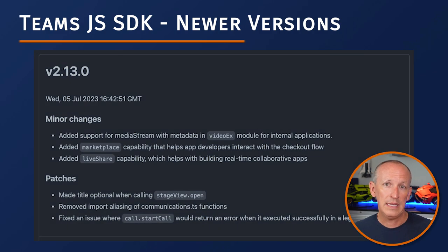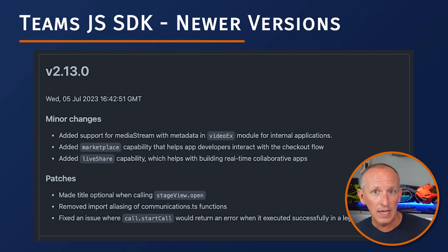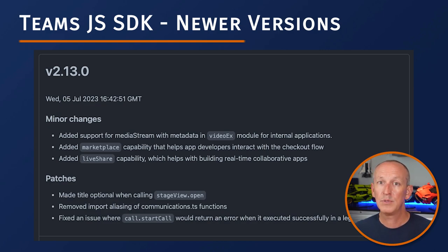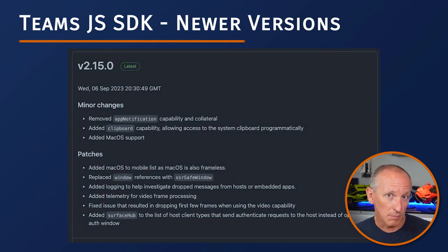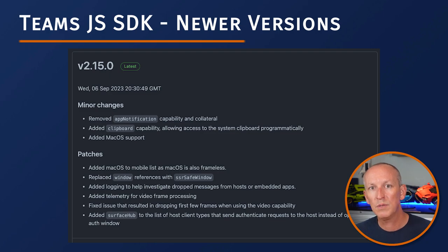The Teams JavaScript SDK group has released several new versions beyond what's included in the SharePoint Framework SDK. For example, Teams JavaScript SDK 2.13 adds a new marketplace capability to help developers with the checkout flow for apps deployed to AppSource, and a LiveShare capability for building real-time collaborative apps. The 2.15 release adds a clipboard capability allowing access to the system clipboard plus support for Mac OS. Unfortunately, this is one downside of the SharePoint Framework team bundling the Teams JavaScript SDK — we're always dependent on a new SharePoint Framework release to get the latest Teams SDK features.